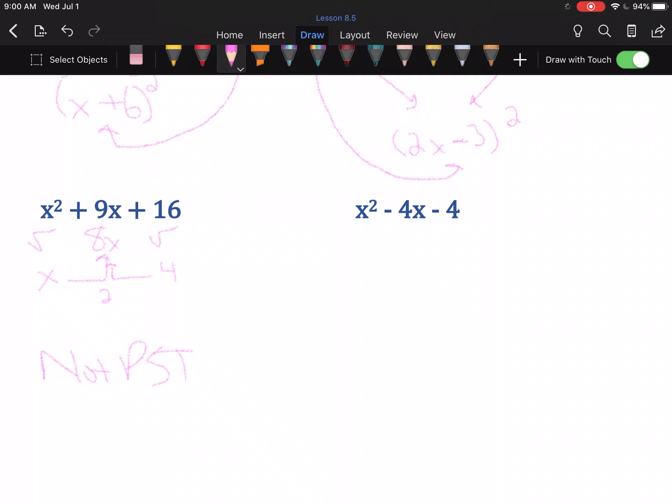This next one, x² - 4x - 4, if you go through the pattern, you're going to be inclined to think it works. Because the square root is x, square root is 2. Don't forget we double. 2 times 2 is 4 times x is 4x. And this looks good. But there's one massive problem.